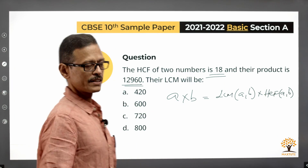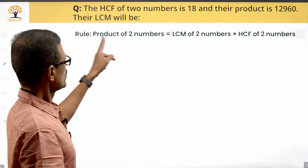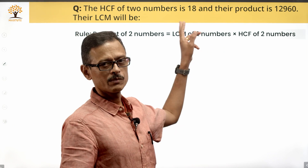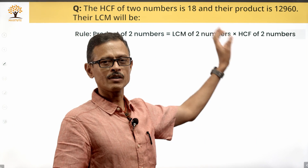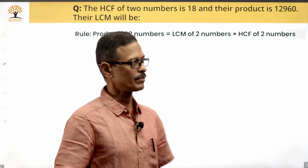This is a property that you need to know. We will read the property once more: the product of two numbers is equal to the product of the LCM of those two numbers and the HCF of those two numbers.